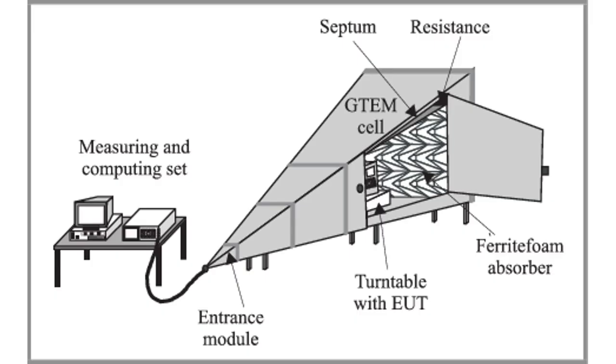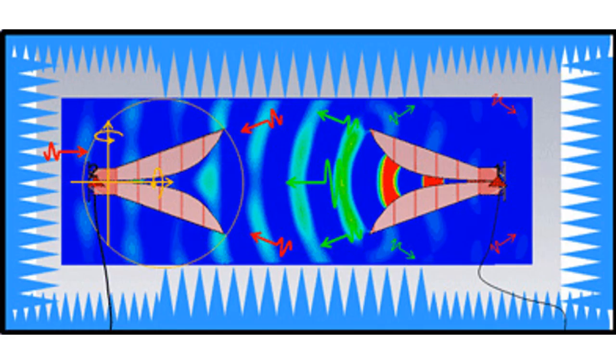Test cells such as the GTM are highly efficient but restricted to small products. Screened chambers can be large, but can be relatively expensive and require powerful amplifiers to create the required stress levels.